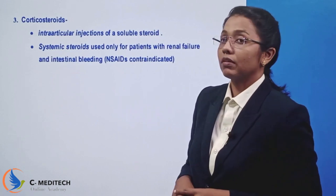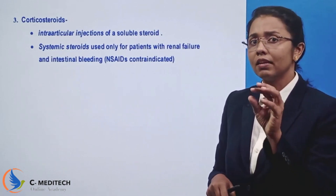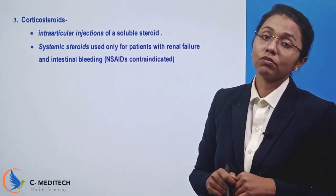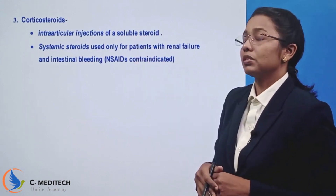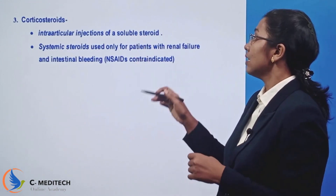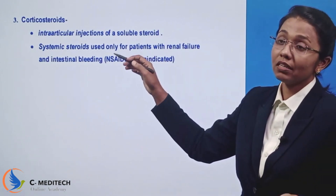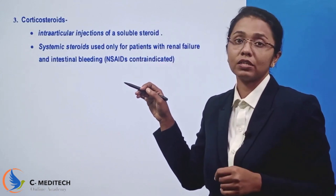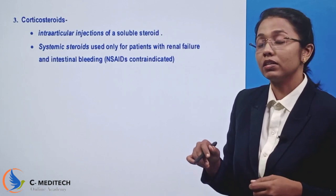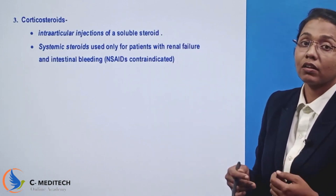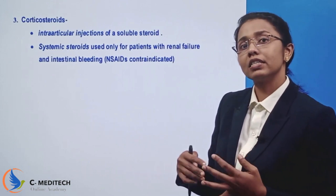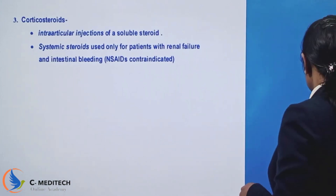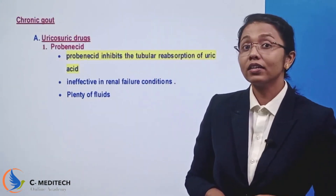Next are corticosteroids. Corticosteroids are usually given by injection — specifically intra-articular injections. Systemic steroids are used when intra-articular injection is not feasible, for example in patients with intestinal bleeding or renal failure.